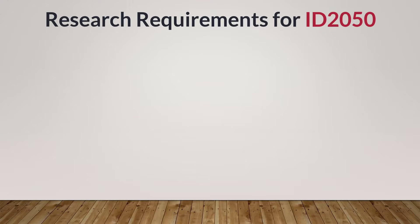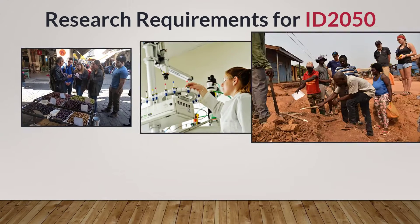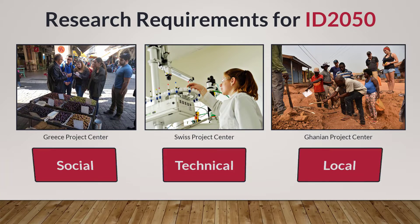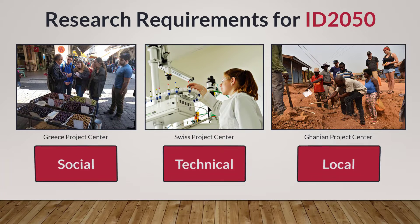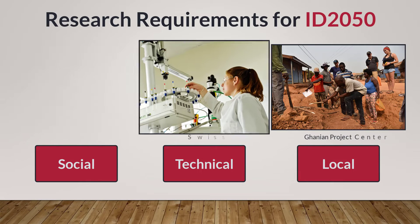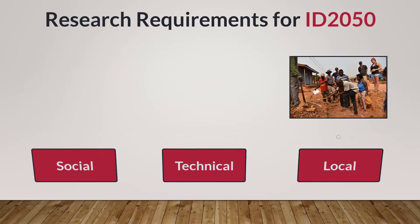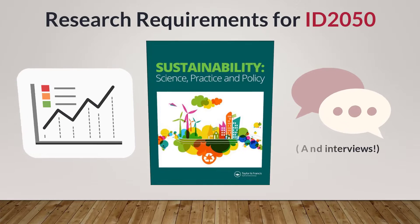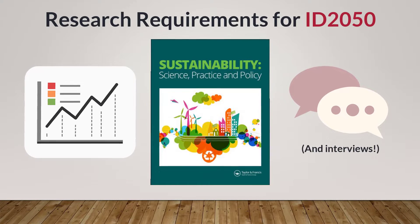Let's start by establishing the type of information you'll need to collect. Given that IQP Research asks students to explore the social, technical, and locally contextual aspects of a project, students will need a variety of different types of information, ranging from statistical data to scholarly research.